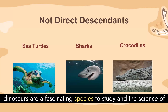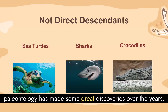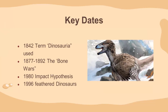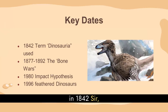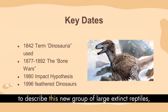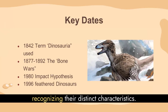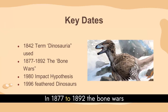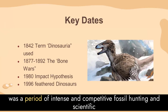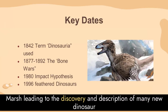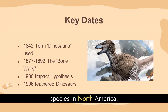Dinosaurs are a fascinating species to study, and the science of paleontology has made some great discoveries over the years. There have been some key events in the timeline. For example, in 1842, Sir Richard Owen coined the term Dinosauria, meaning terrible lizards, to describe this new group of large, extinct reptiles, recognizing their distinct characteristics. In 1877 to 1892, the Bone Wars was a period of intense and competitive fossil hunting and scientific rivalry between Edward Drinker Cope and Othniel Charles Marsh, leading to the discovery and description of many new dinosaur species in North America.